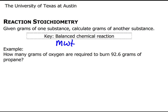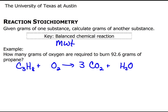How many grams of oxygen are required to burn 92.6 grams of propane? In another video, we figured out how to break down these words and know what the balanced chemical reaction is. We know that it's C3H8 plus O2 gives CO2 and H2O. Propane is C3H8. I'm going to balance the carbons, balance the hydrogens, and then balance the oxygens last.